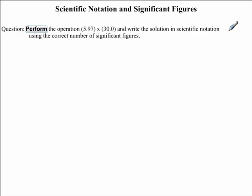In this mini-clip, we will be discussing scientific notation and significant figures. We will be talking about these topics while we answer this question here. The question reads, perform the operation 5.97 times 30.0 and write the solution in scientific notation using the correct number of significant figures.